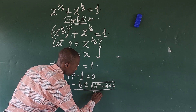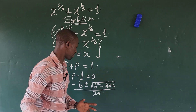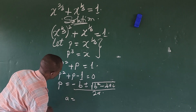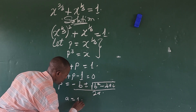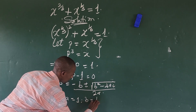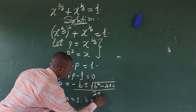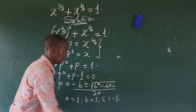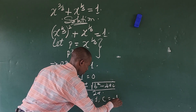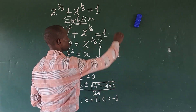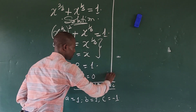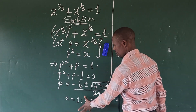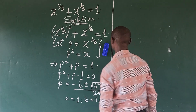all over two a. We bring the values of a, b, and c from the equation: a is equal to one, b is equal to one, and c is equal to negative one.